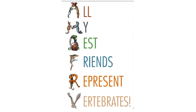I have this poster that I can get a copy for you. It's called All My Best Friends Represent Vertebrates. This is a fun and easy way to remember the names of the five animal groups. Here's how you can remember it: A stands for amphibians, M in My stands for mammals, B in Best stands for birds, F in Friends stands for fish.